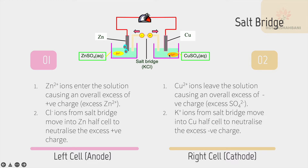The copper ions leave the copper sulfate solution as they accept two electrons from the zinc flowing through the wire. This causes an excess of SO₄²⁻ sulfate ions. The K⁺ potassium ions from the salt bridge will move into the copper half cell to neutralize the excess negative charge — the SO₄²⁻ ions — at the copper half cell.